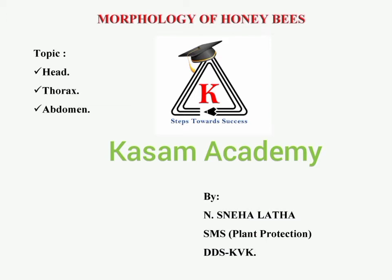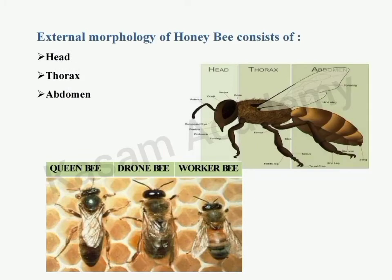Let's discuss the external morphology of honeybees. Generally, like other insects, the honeybee body is divided into head, thorax, and abdomen. Looking at the castes of honeybees — queen, drone, and worker bee — the pictures represent how they look externally.